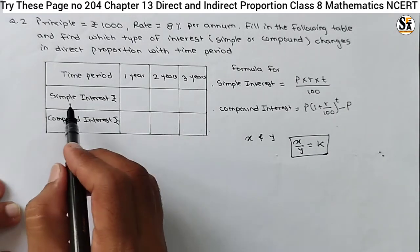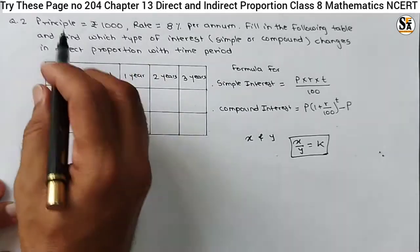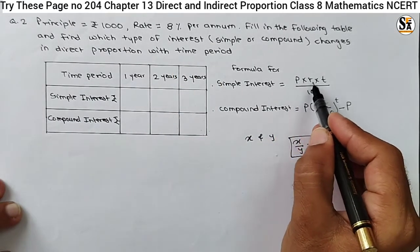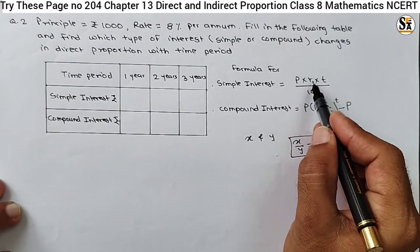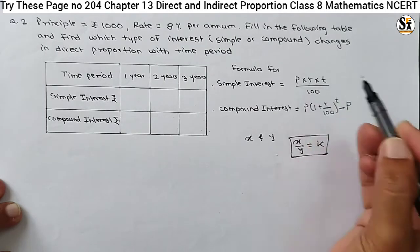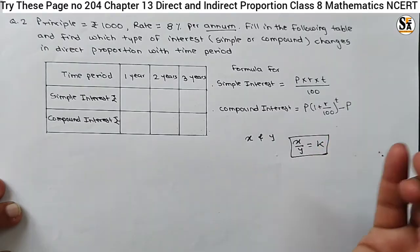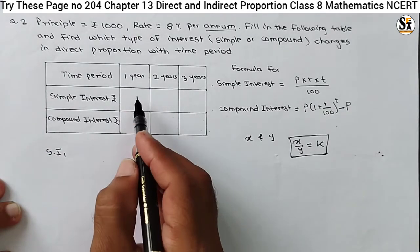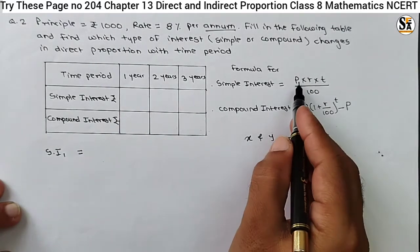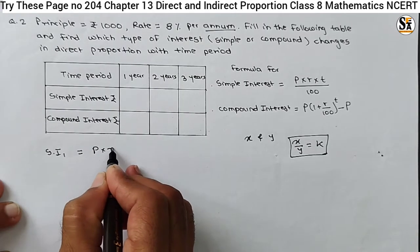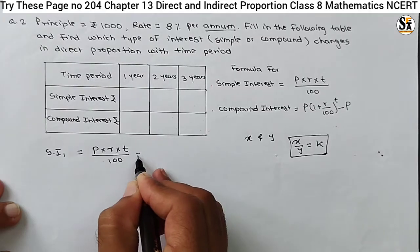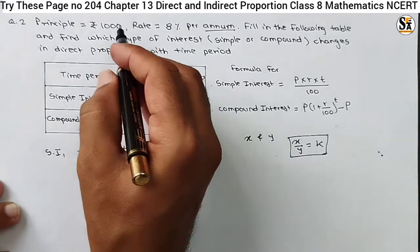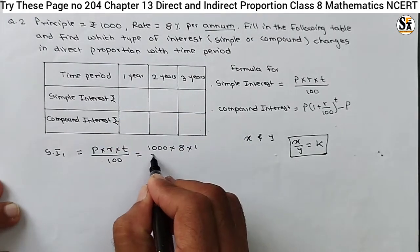Here we have to first fill the table — find out the simple interest. What is given? Principal is given 1000 rupees, rate 8% per annum, and this is the period. The formula for simple interest we know is PRT divided by 100, where P is principal, R is rate of interest per annum — per annum is important — and T is the period.